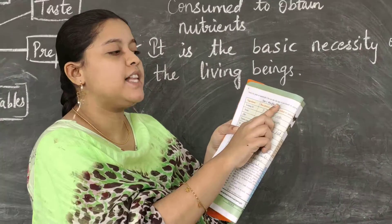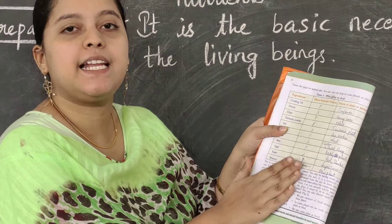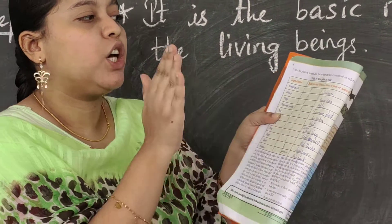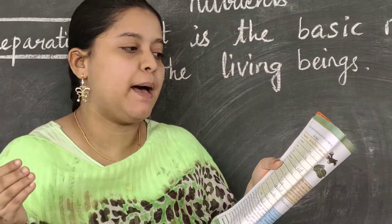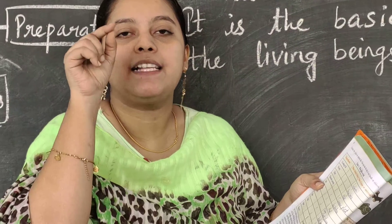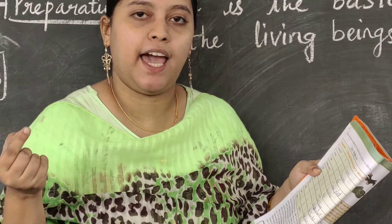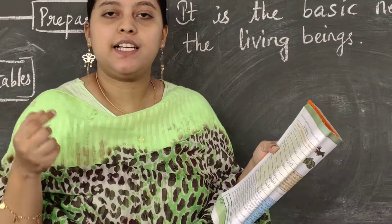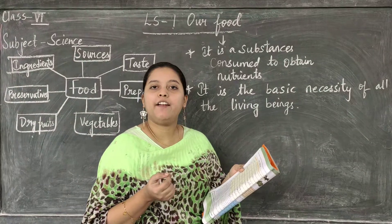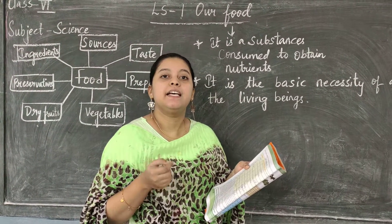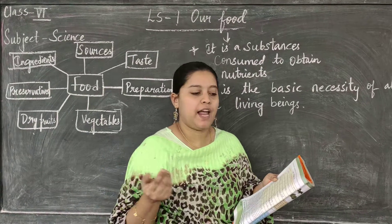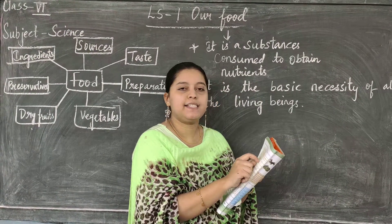Take out page number four. In Table Number Three, you need to write the source of each ingredient — if it is from a plant, mark it 'P'; if from an animal, mark it 'A'; if from others, mark it 'O.' First one: cooking oil — we get it from plants, so write P. Example plant: sunflower.